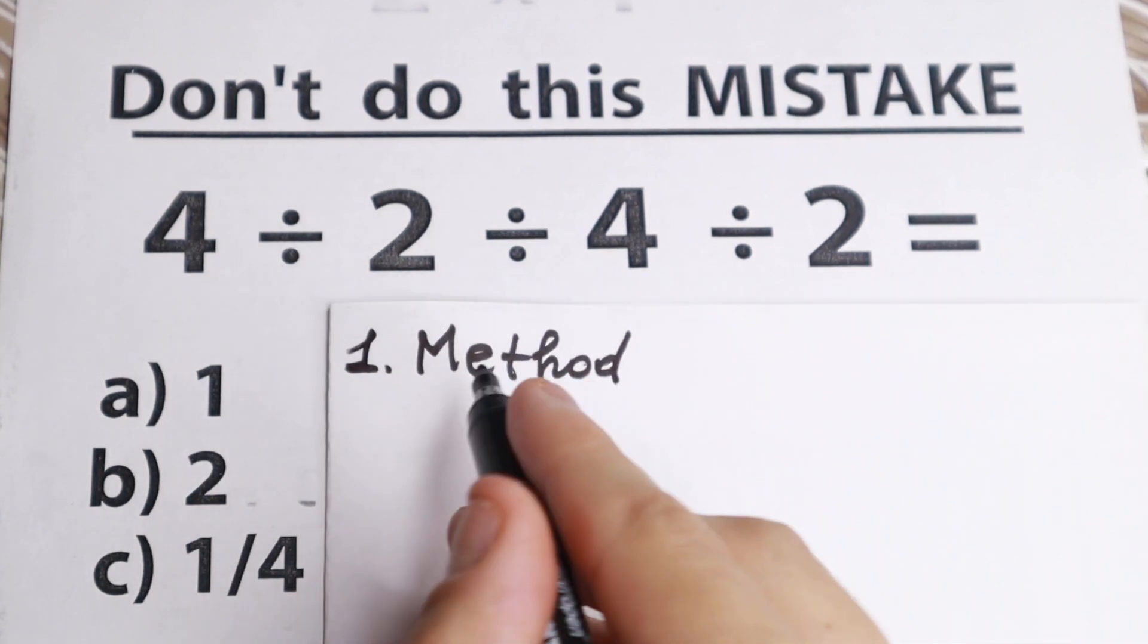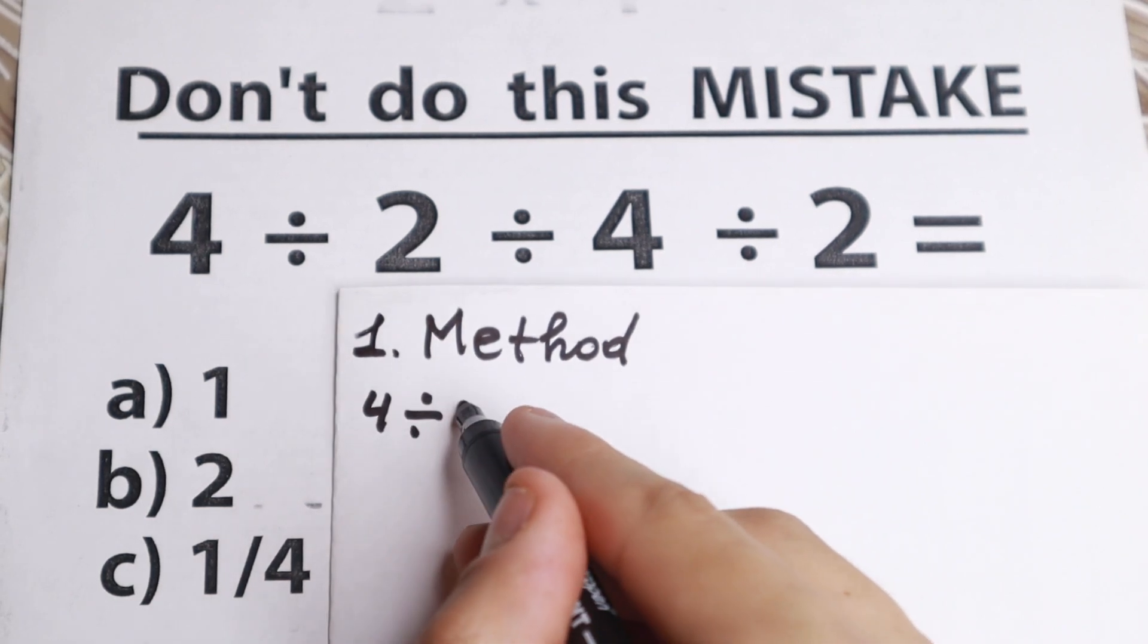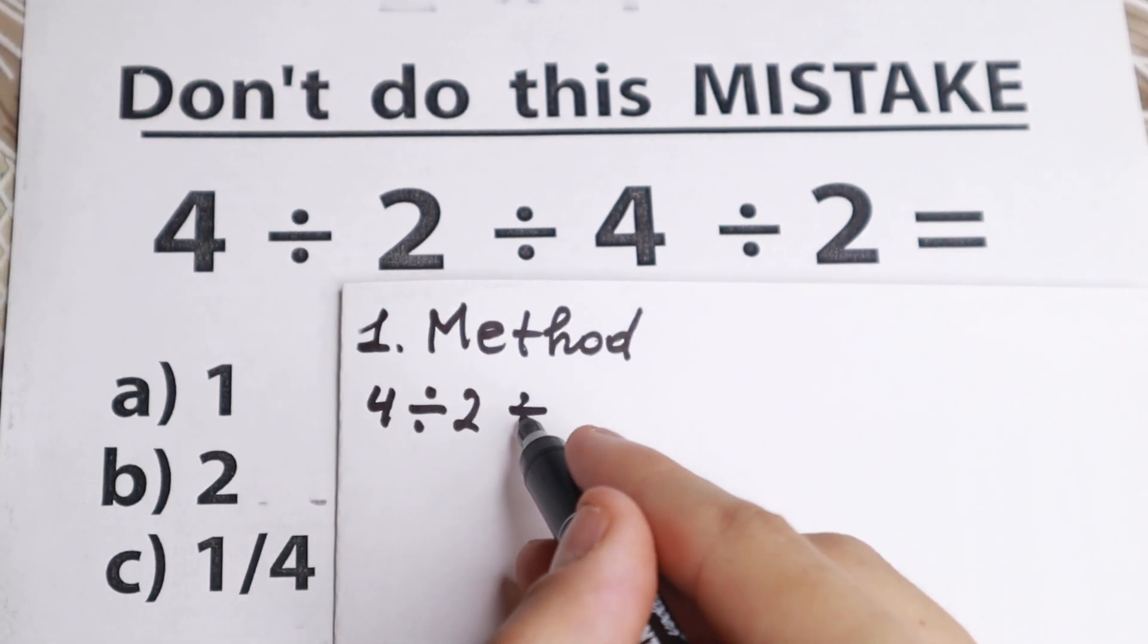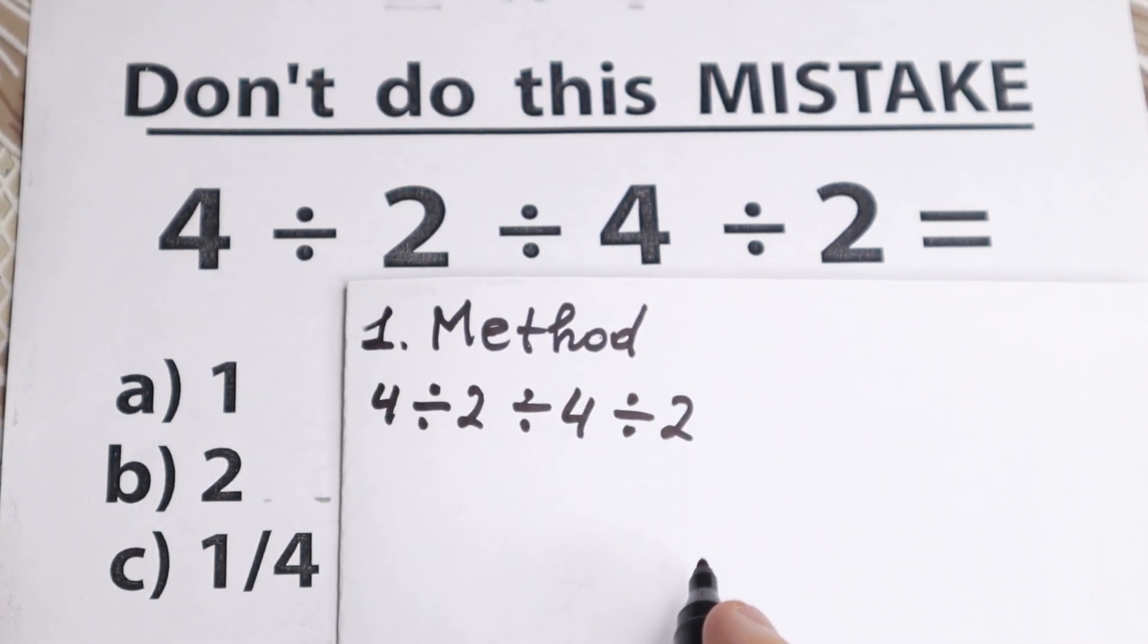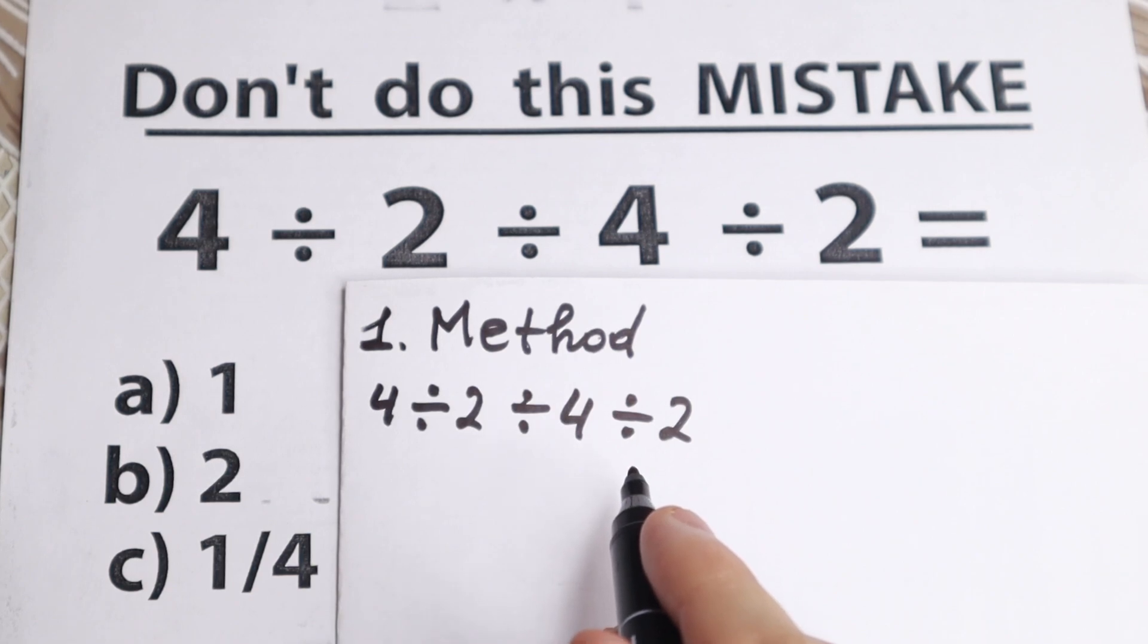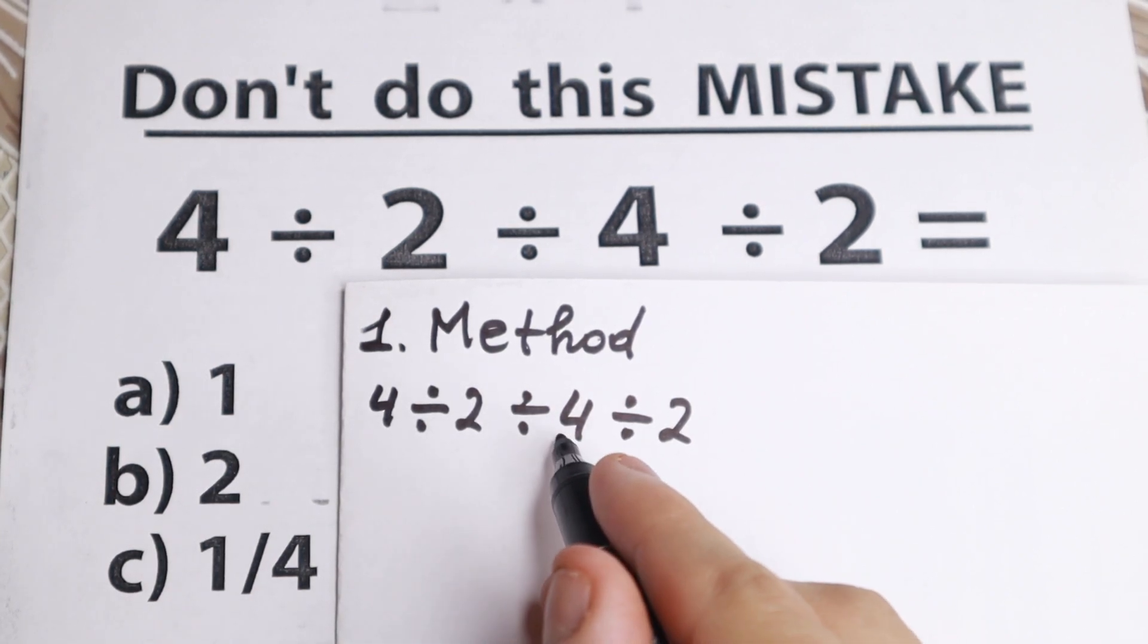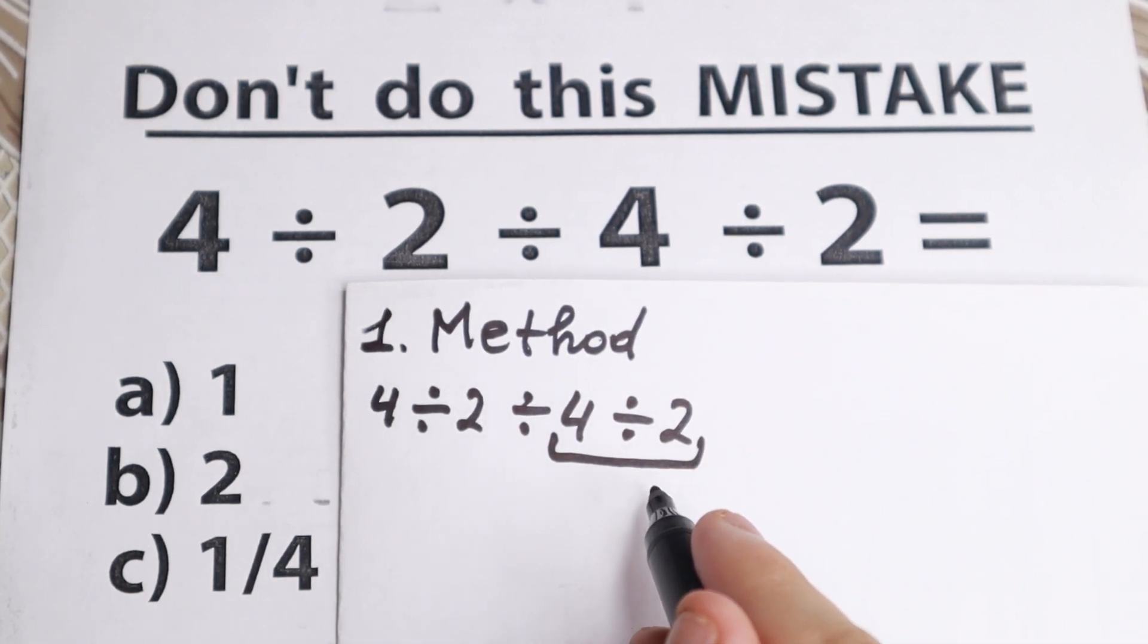So we have this division, we have 4 dividing by 2, dividing by 4, and dividing by 2. A lot of students do this mistake, they think that they can go in another order. So they divide 4 divided by 2, which is 2.